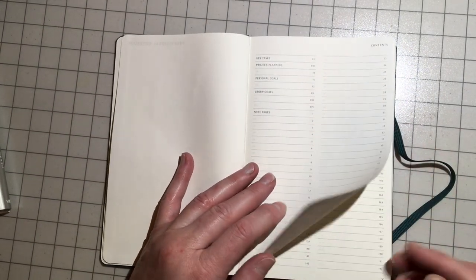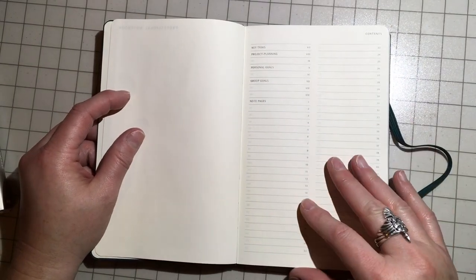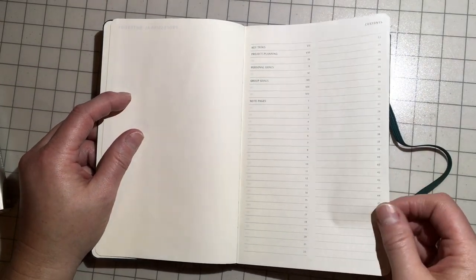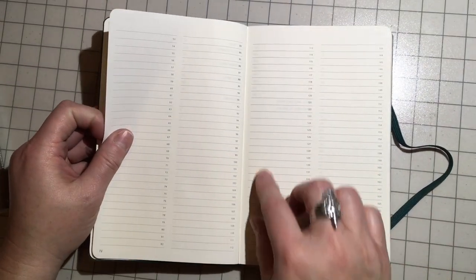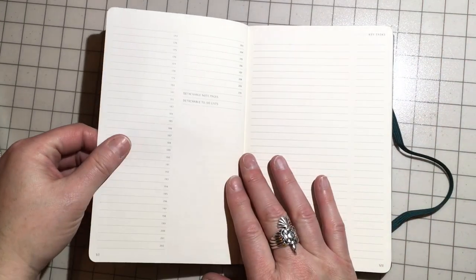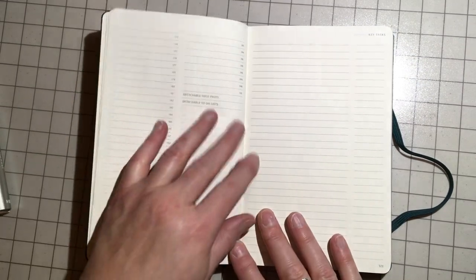So, I don't know if this is supposed to be in competition with, like, the bullet journals. Or, I'm not sure. But, I love having a table of contents that's already noted. So, back here it tells you the detachable pages and the to-do lists.